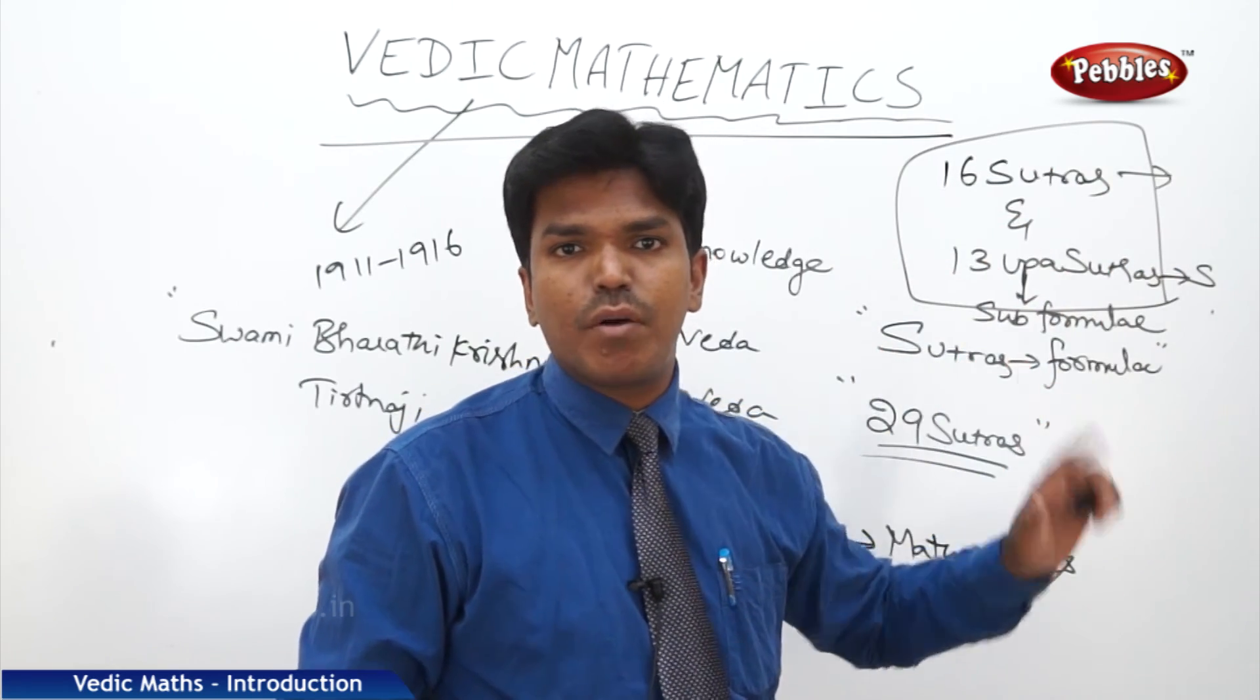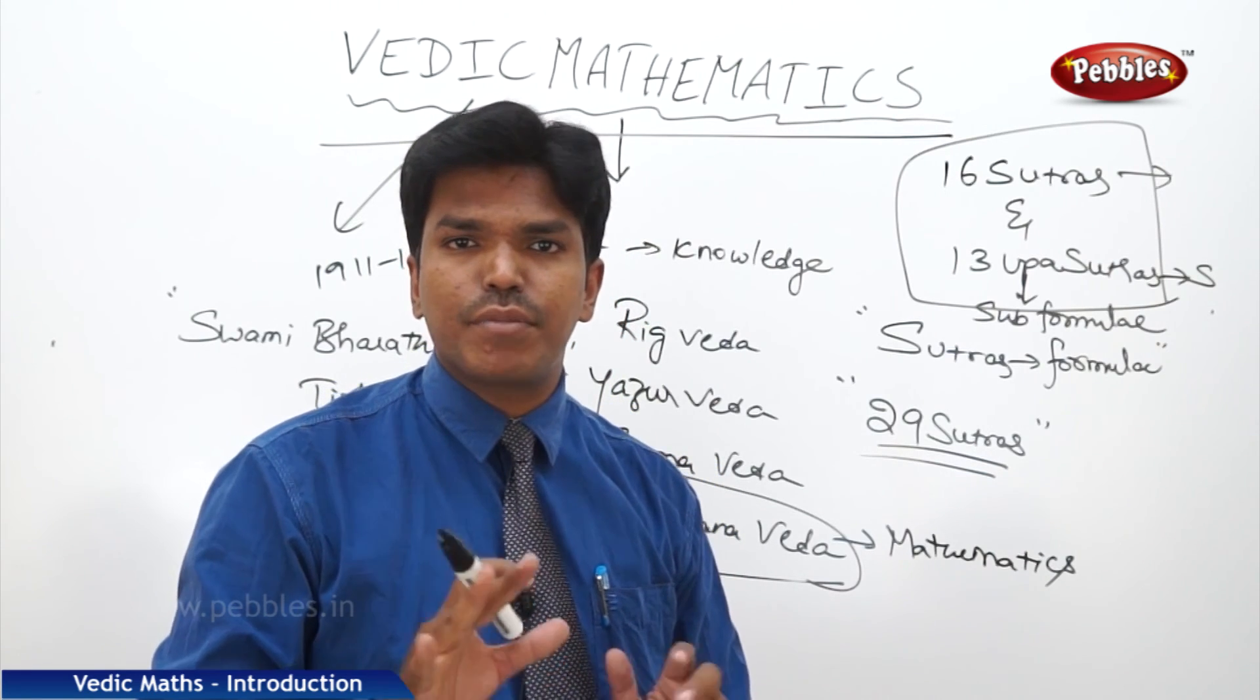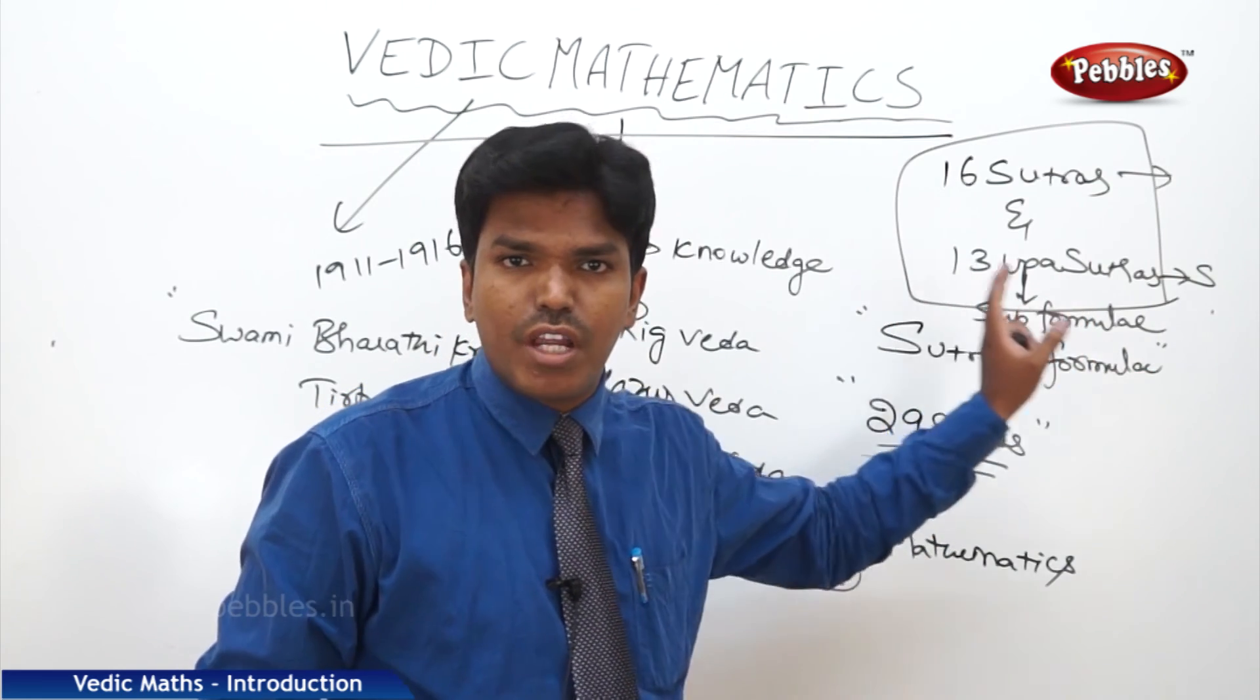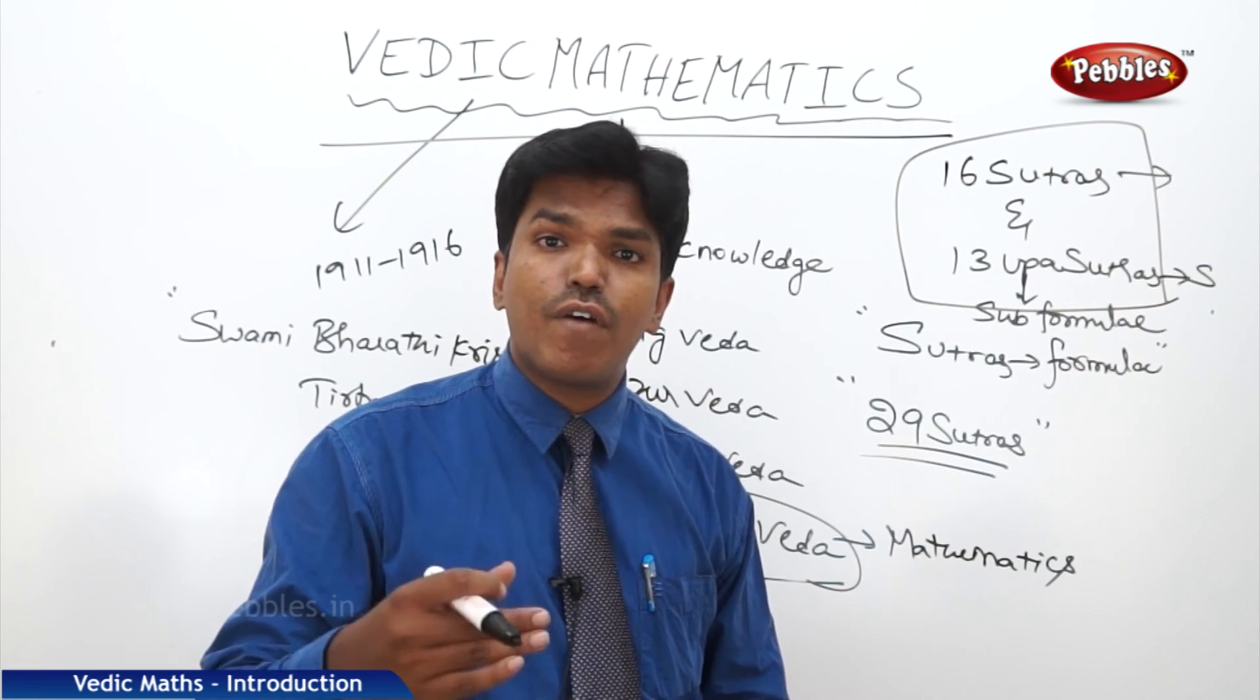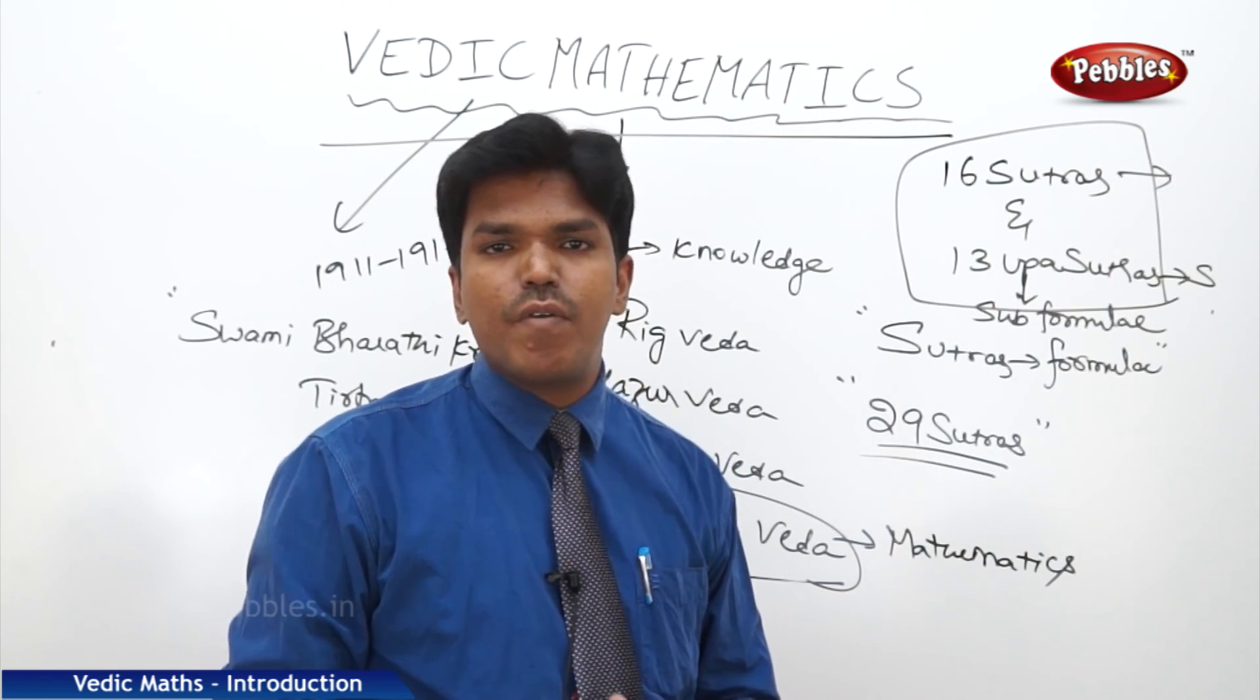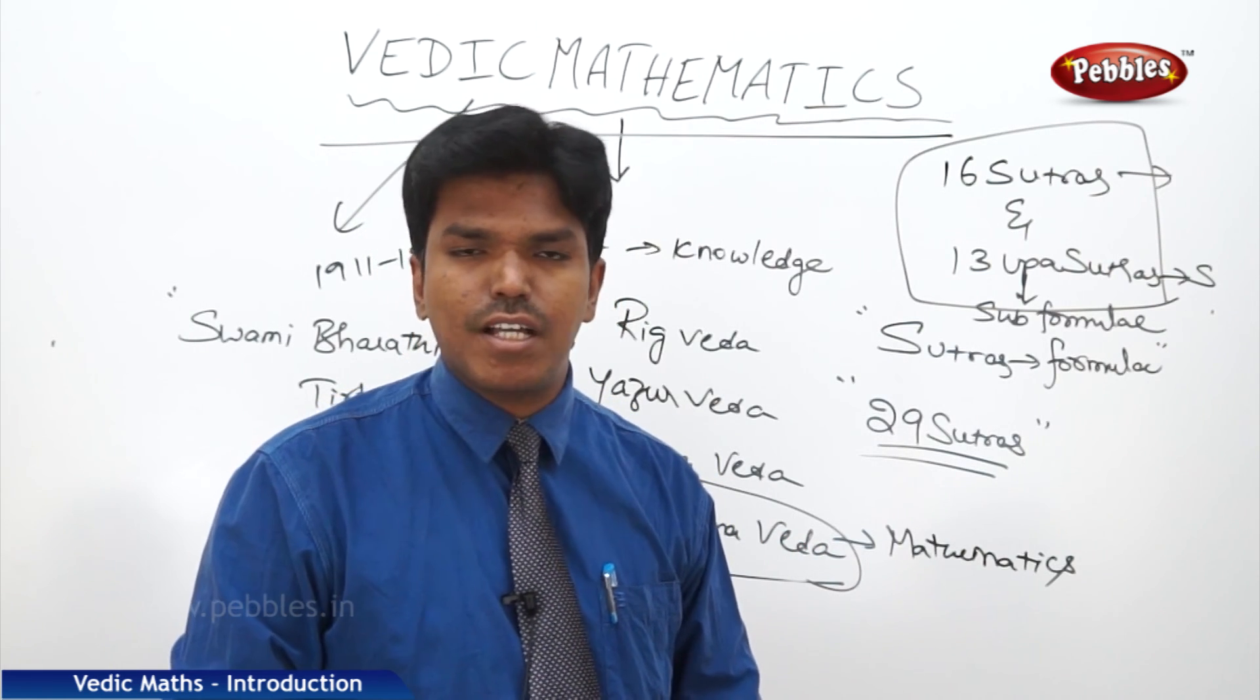In total, we have 29 formulae. With the help of these 29 formulas, we are going to do the maths easier, faster, and simpler. So using these 29 sutras or these 29 formulas, anybody by applying these sutras, anybody can do the maths easier, faster, and simpler. So this is the brief introduction of Vedic Mathematics. Now we will see the application part.